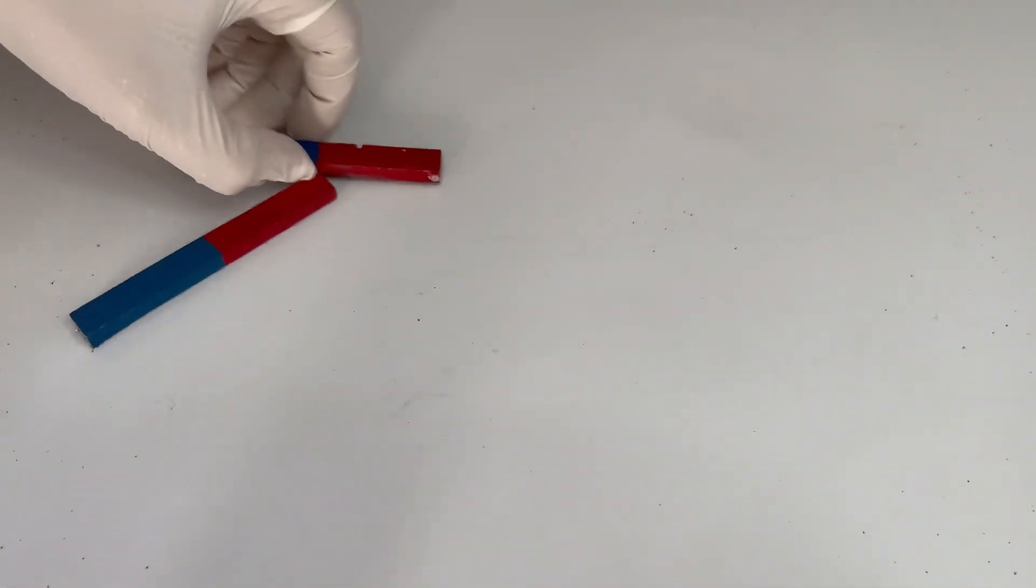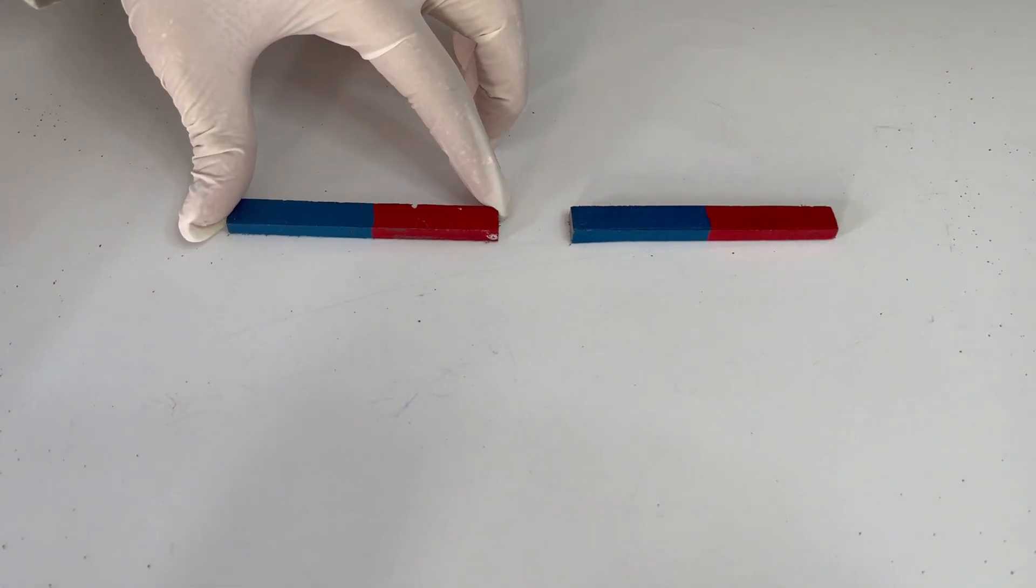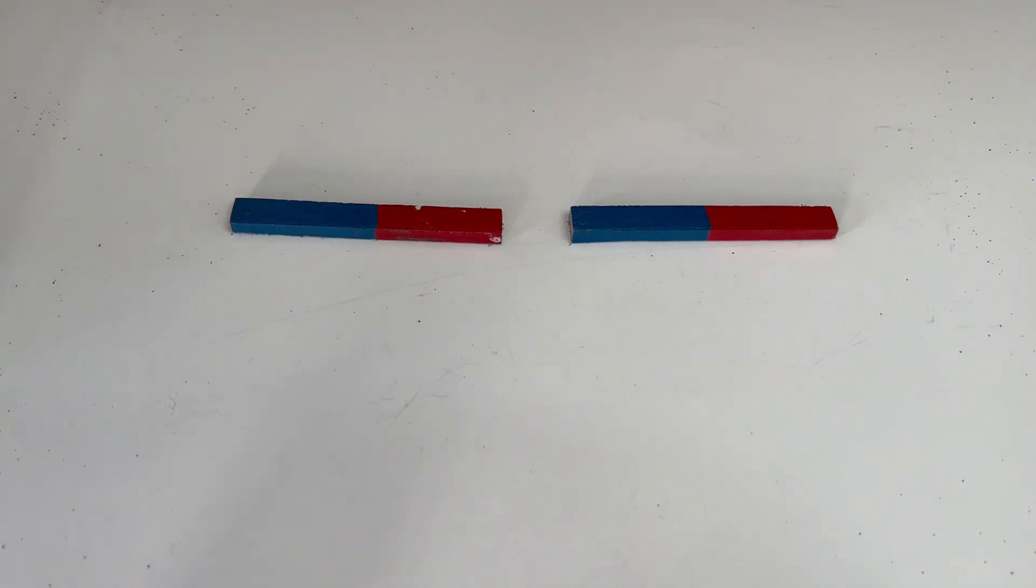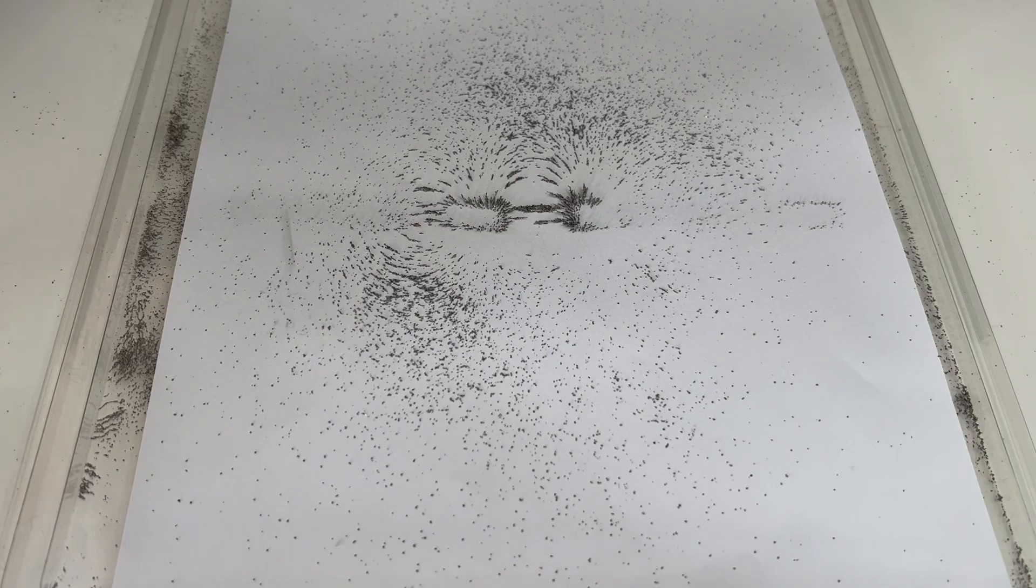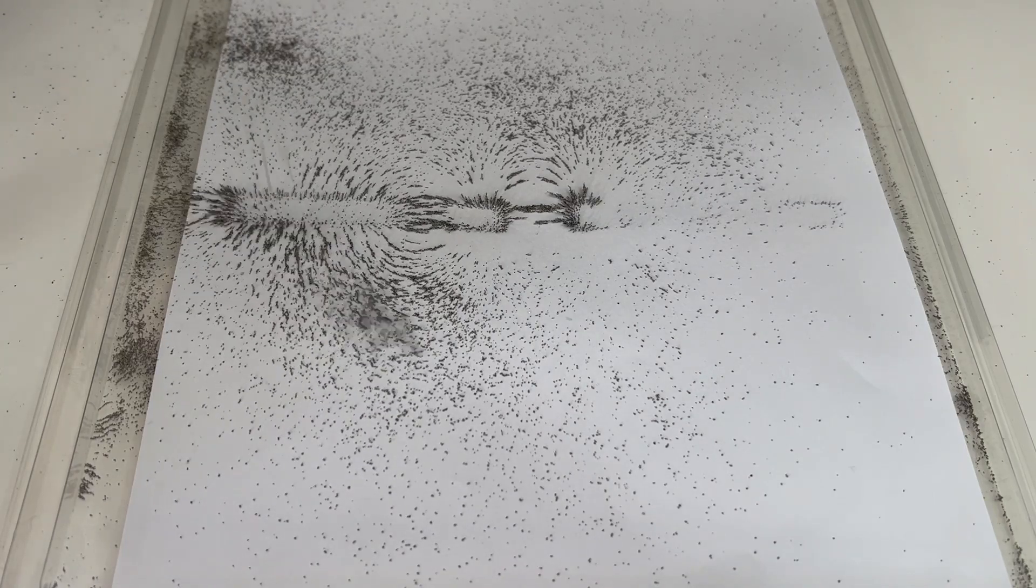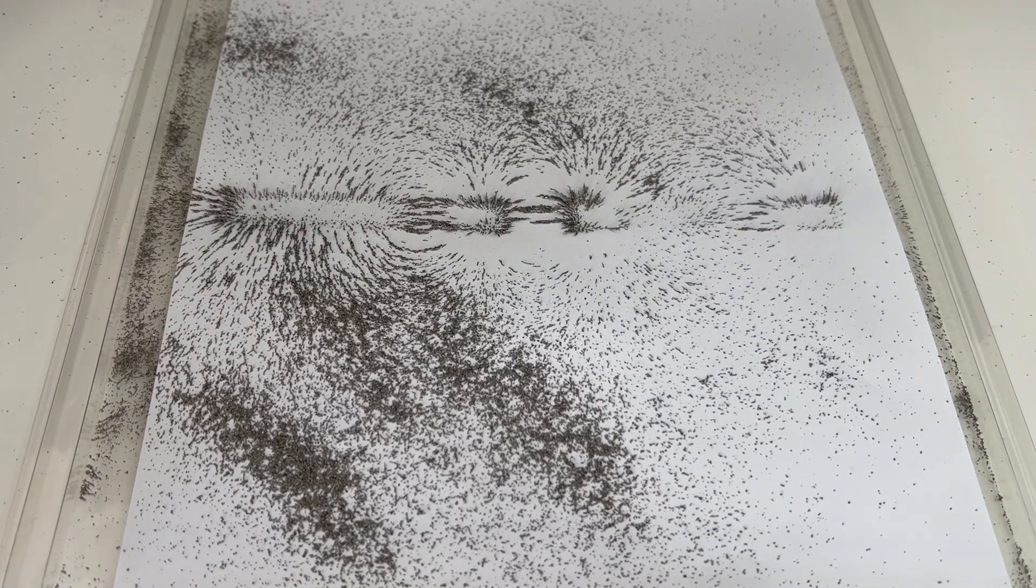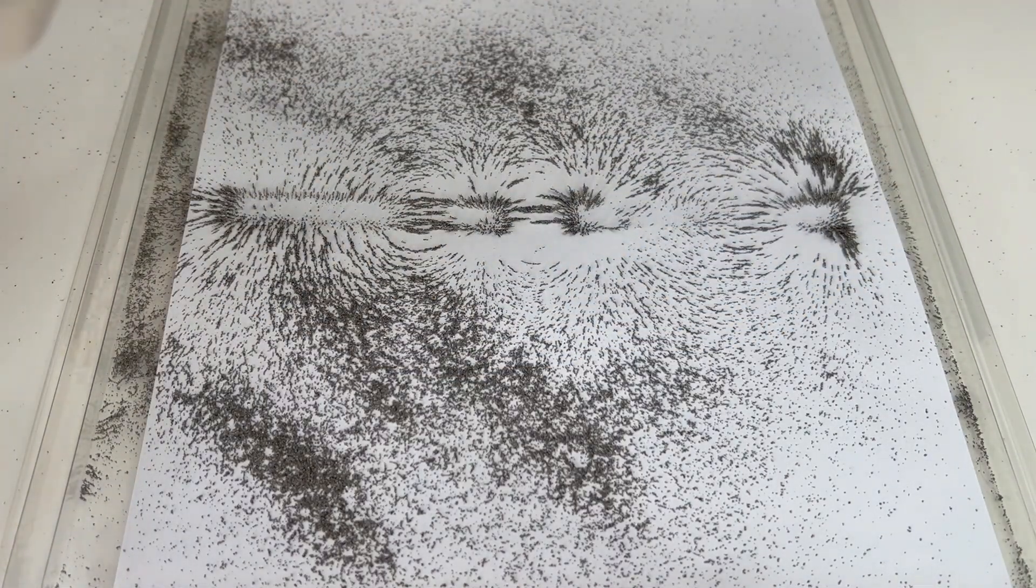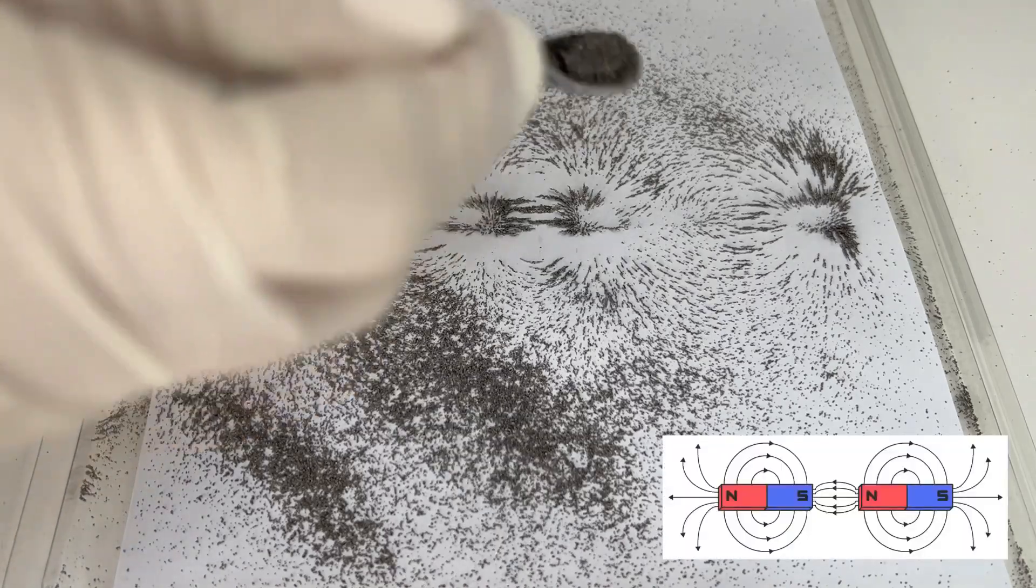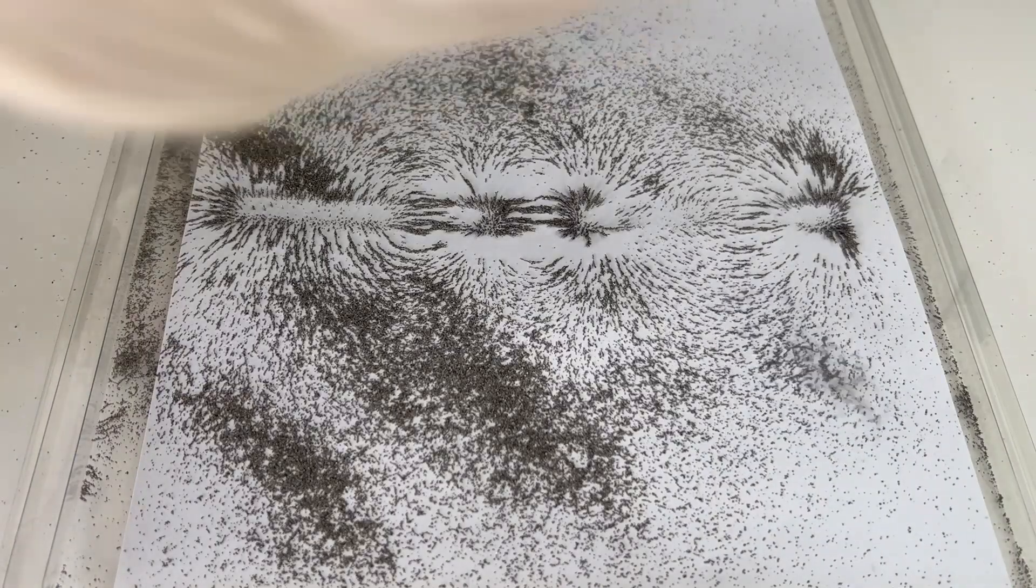Now I rotate one of the magnets so the north and south poles face each other. Now look at the pattern. The iron filings form continuous lines between the two magnets. That's because opposite poles attract and the magnetic field flows from the north pole of one magnet to the south pole of the other.